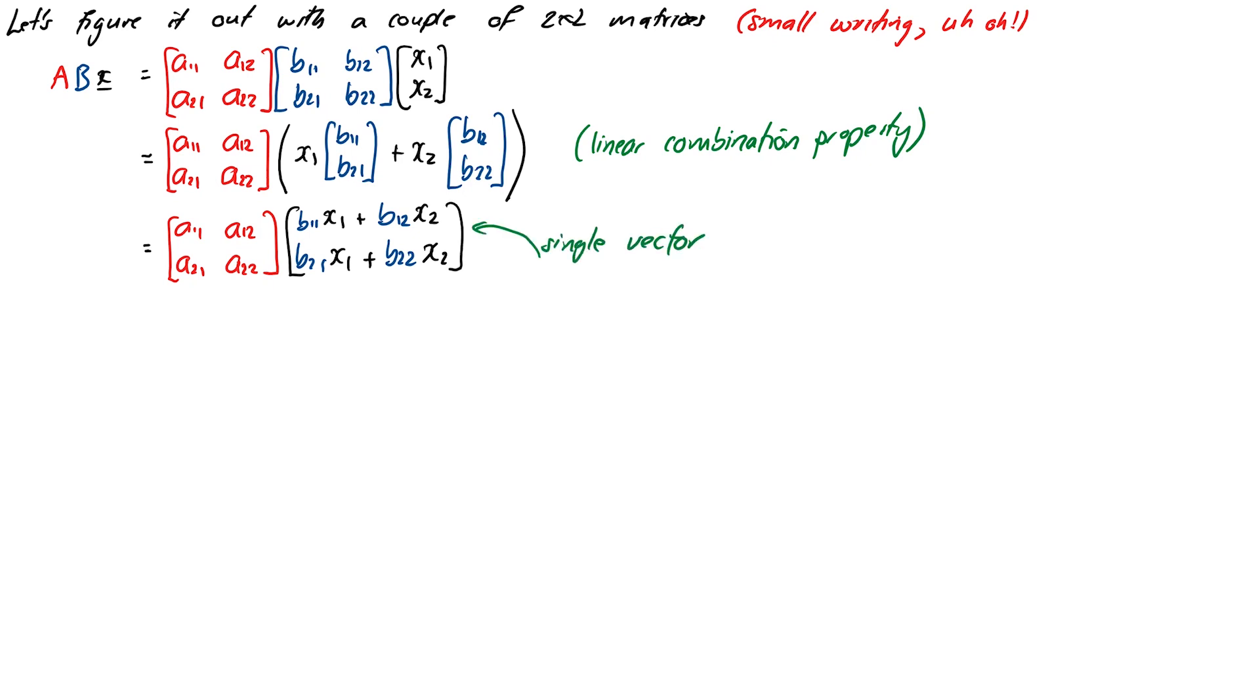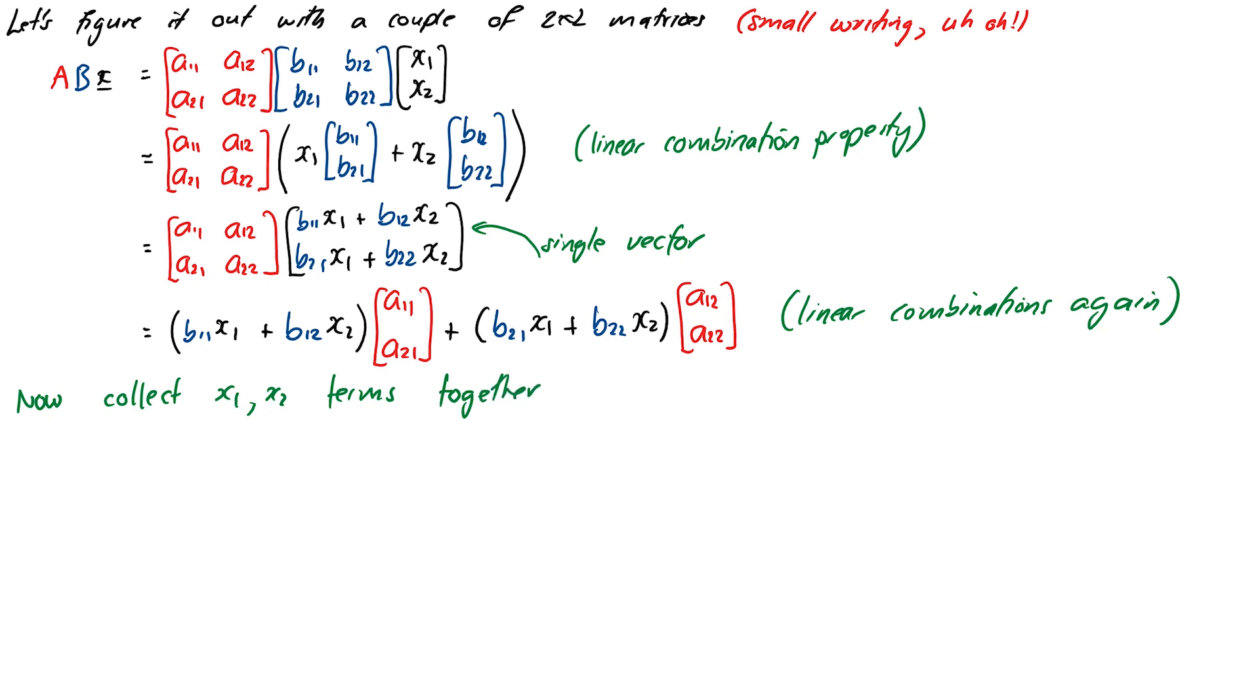Now we have a matrix-vector product again, with matrix A and that more complicated vector. We can consider this as a linear combination of the columns of A. This is getting pretty full on, but good news is we're about halfway there. We've expanded most stuff out. Now we want to gather the X terms together to make it look like a single matrix-vector product.